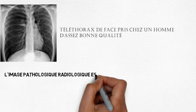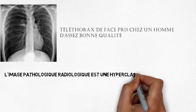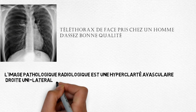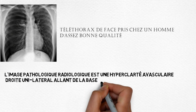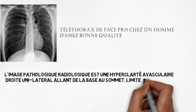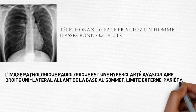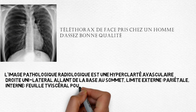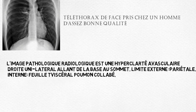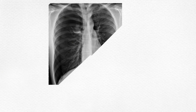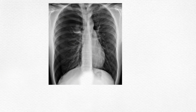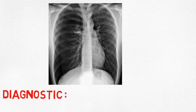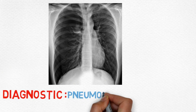L'image pathologique radiologique ici est une hyperclarté avasculaire droite, unilatérale, allant de la base au sommet. La limite externe est pariétale et la limite interne correspond au feuillet viscéral du poumon collabé. Diagnostic : un pneumothorax total droit.